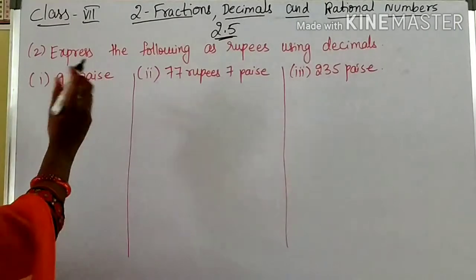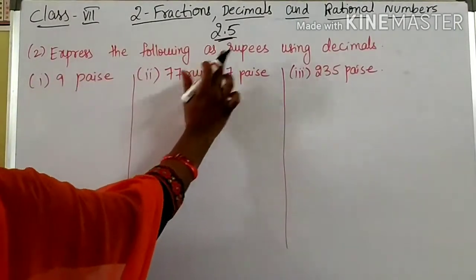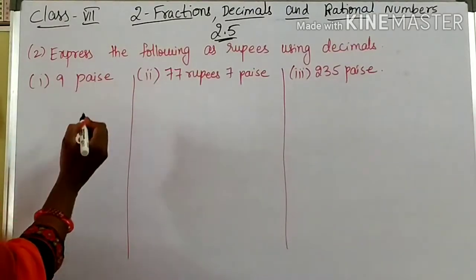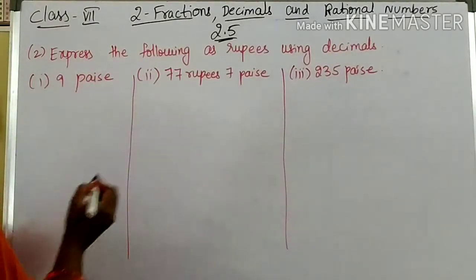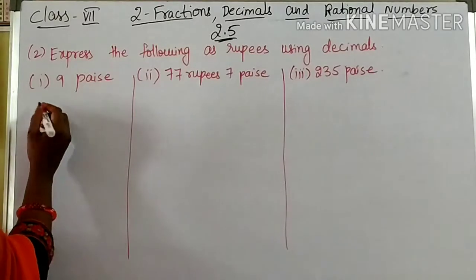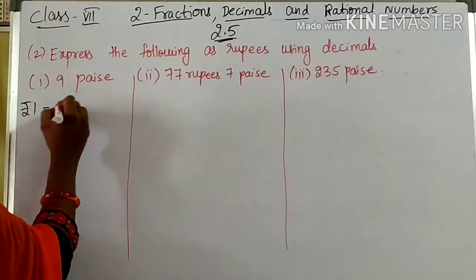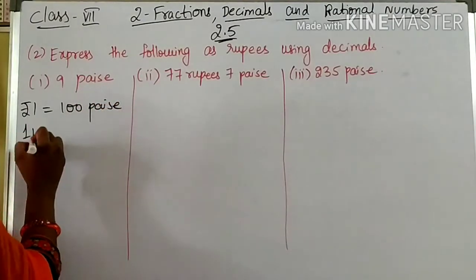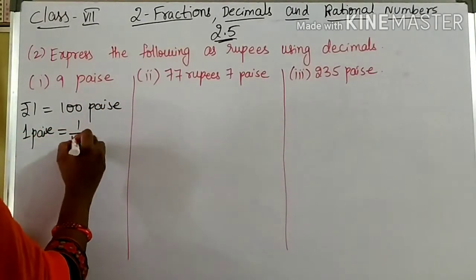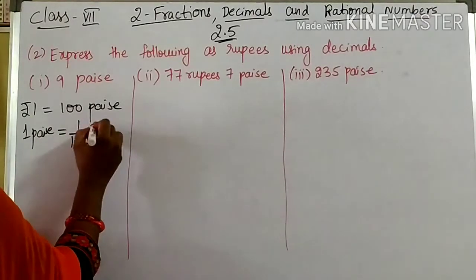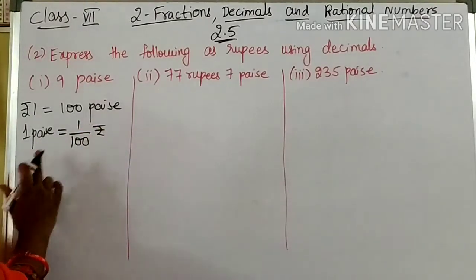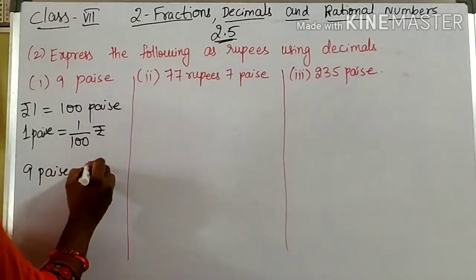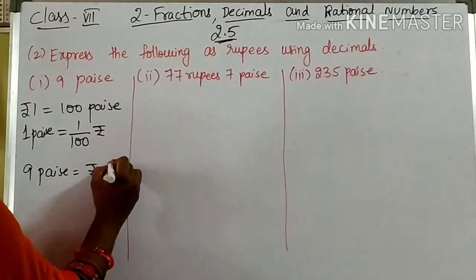Coming to the second question: Express the following as rupees using decimals. In the first one, they are given 9 paise. You have to convert into rupees. You know that 1 rupee is nothing but 100 paise. Then, 1 paise is nothing but 1/100 rupees. They are given 9 paise, so you write rupees 9/100.